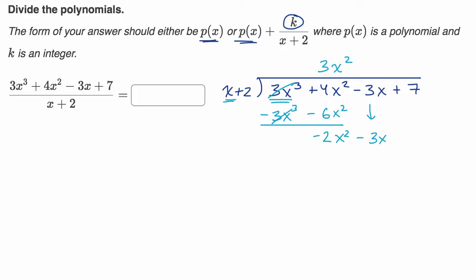And then 4x² - 6x² is -2x². Bring down that -3x. And now we would want to say, how many times does x go into -2x²? It would go -2x times. Put that in our first degree column. Negative two x times two is -4x. Negative two x times x is -2x².